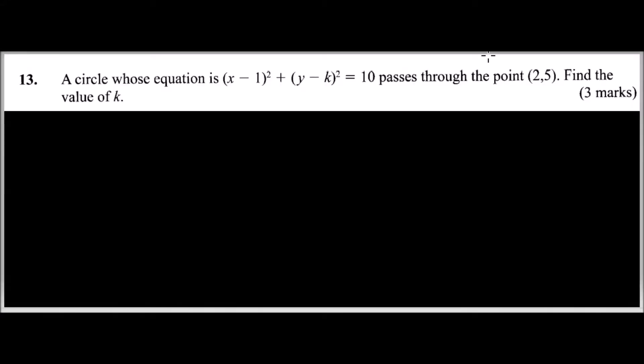Question number 13: We are told a circle whose equation is (x - 1)² + (y - k)² = 10 passes through the point (2,5). Find the value of k, and you'll get 3 marks.